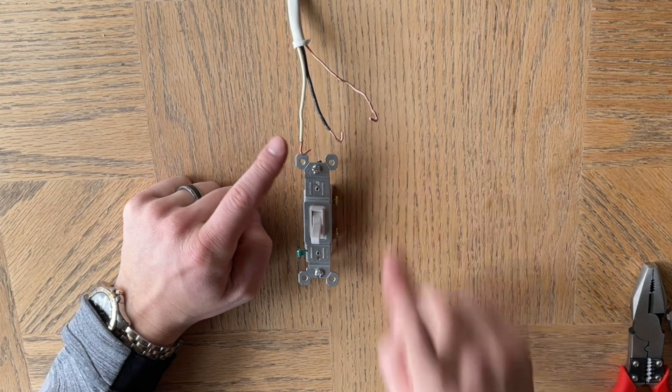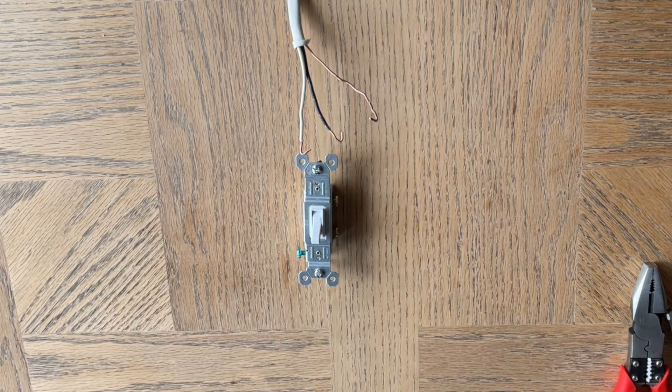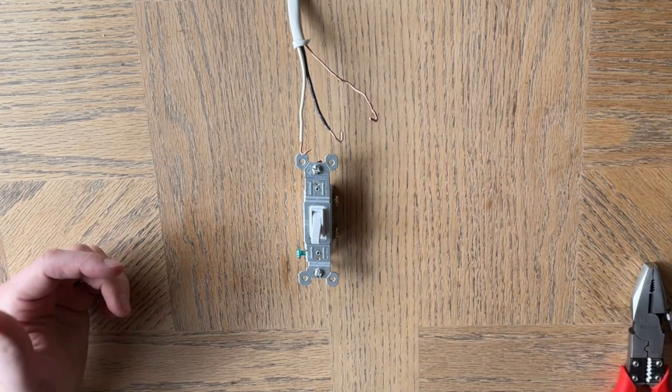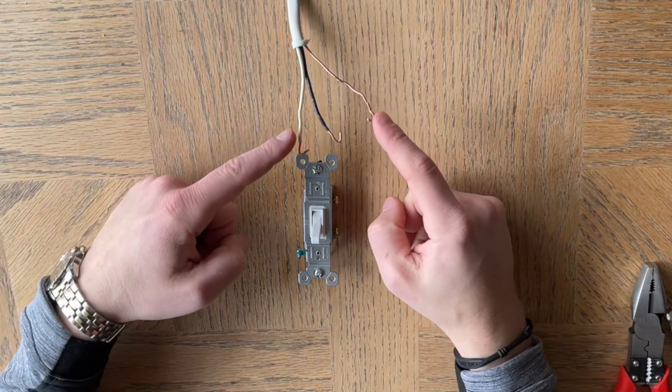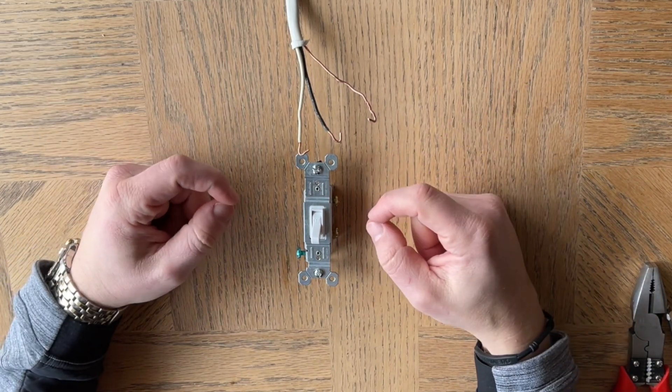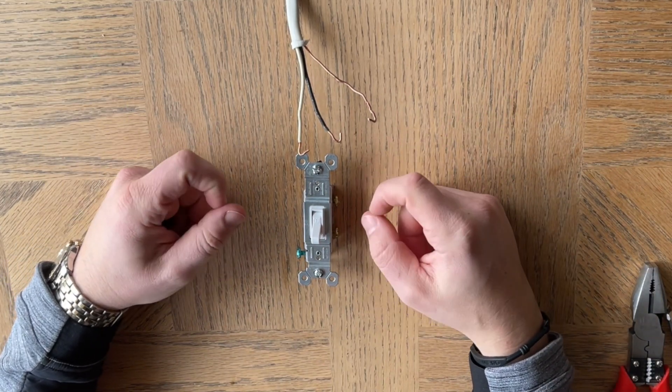Well, if you've tested them with a tick tracer and you've determined that they aren't live, then what's happening is these are coming from the ceiling and your live wires from the circuit panel are up in the fixture box.